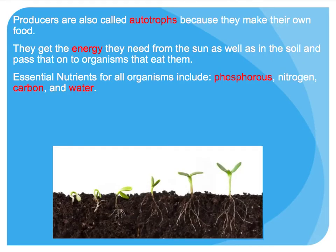Producers are also called autotrophs because they make their own food. They get energy from the sun and pass it on to organisms that eat them. They also get essential nutrients — including phosphorus, nitrogen, carbon, and water — from the soil. Autotroph is essentially the same meaning as producer; it's just another term to describe this type of organism.